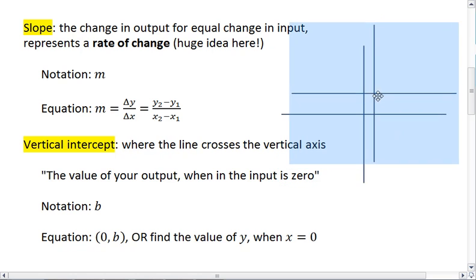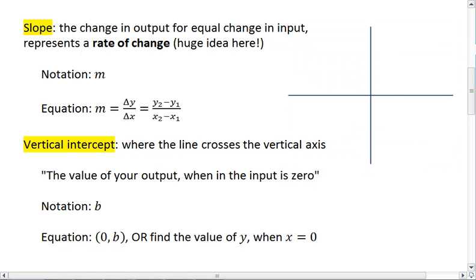For example, if I have my Cartesian plane, we always like to number and label our axes, so that we know exactly what we're looking at.